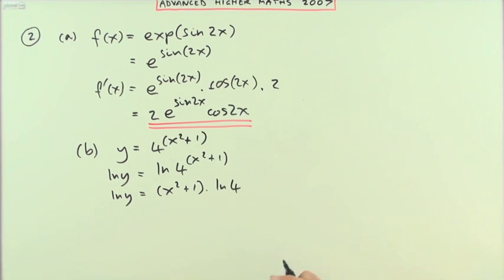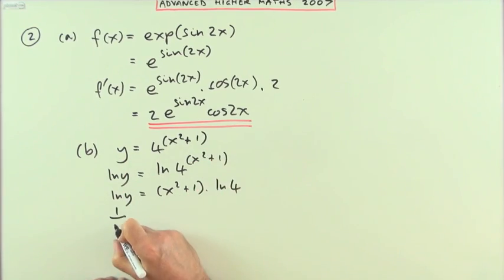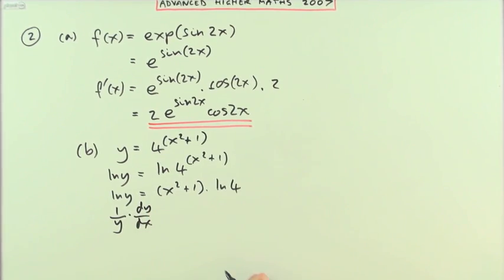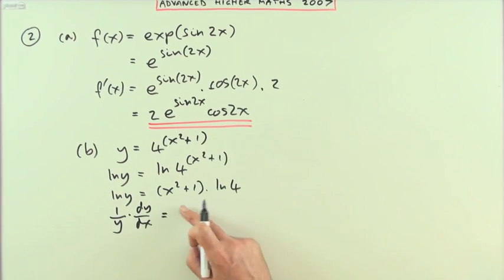And then differentiate that. Well, log n y, which is a function of a function—the logarithm, the derivative of logarithm, is 1 over the variable it's acting on, which in this case is y. And if that y isn't the x you're interested in, then differentiate that with respect to it, and it was x I wanted. On this side, I've got log n 4 times this, so that'll just be log n 4 times x² multiplied by the power, so that'll be 2 log n 4 x.